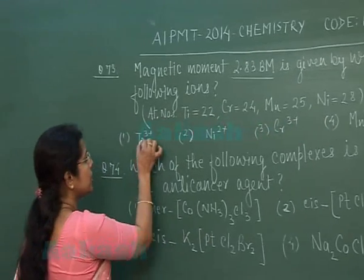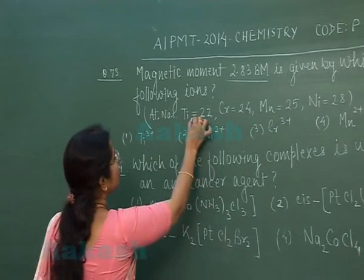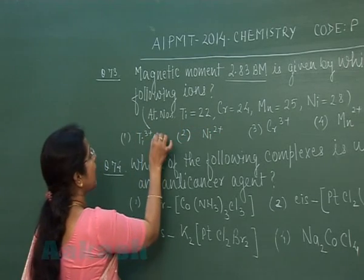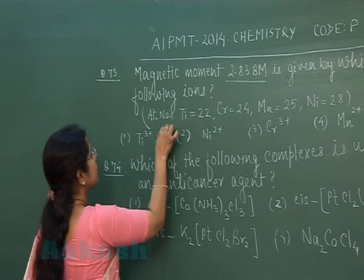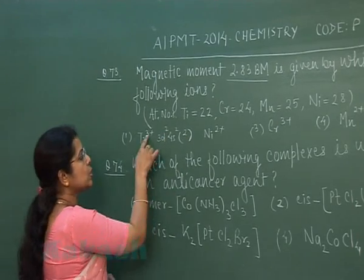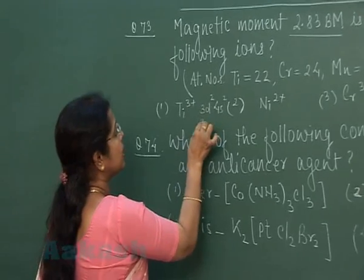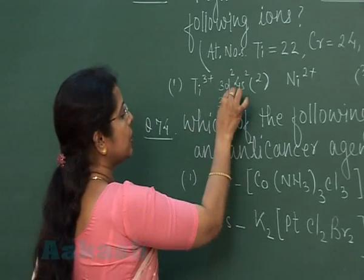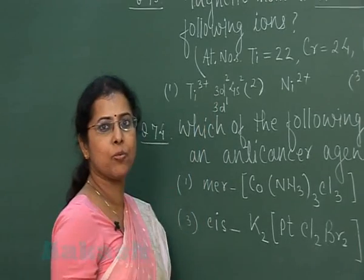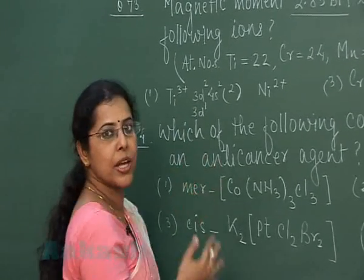Now see the configuration: titanium atomic number is 22. So titanium is having electronic configuration 3d2 4s2, and when it is +3 state, then configuration becomes 3d1. So this ion is having only one unpaired electron. It can't be the answer.